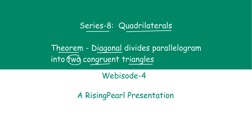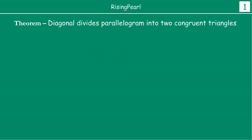So let us get started. Let us know a little bit about the theorem. The theorem is telling us that a diagonal divides a parallelogram into two congruent triangles. What is a parallelogram? A parallelogram is a quadrilateral where opposite sides are parallel.